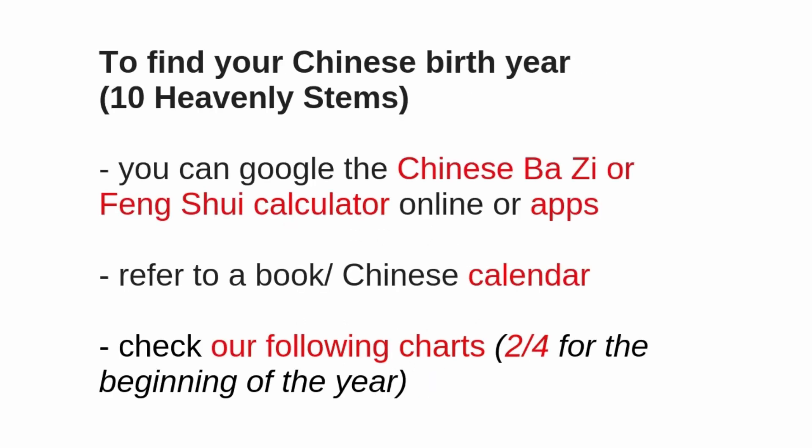There are several ways to find your heavenly stem of your birth year. First, you can check your Chinese Bazi or feng shui calendar. If you Google it online or find a phone app, just input your western birth year and it will calculate for you. You can also refer to a Chinese calendar and do it the old-fashioned way, or refer to the following charts we have for the 10 heavenly stems.